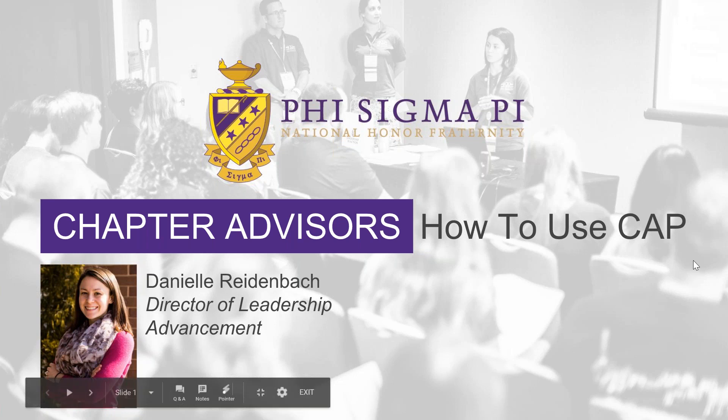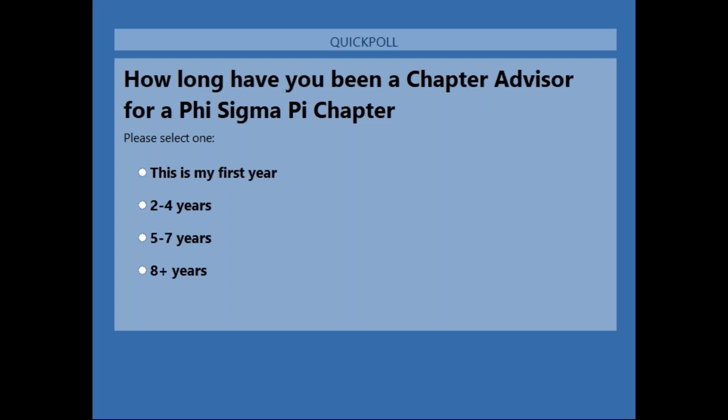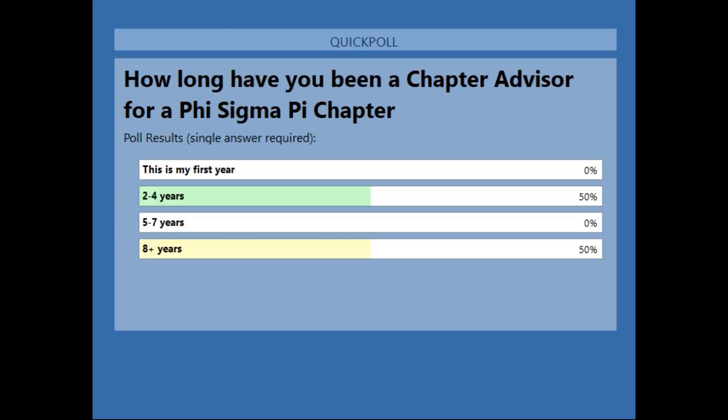The first poll question is: How long have you been a chapter advisor for a Phi Sigma Pi chapter? We have one person for two to four years and another for eight plus years. Thank you so much for your dedication — we really appreciate it.